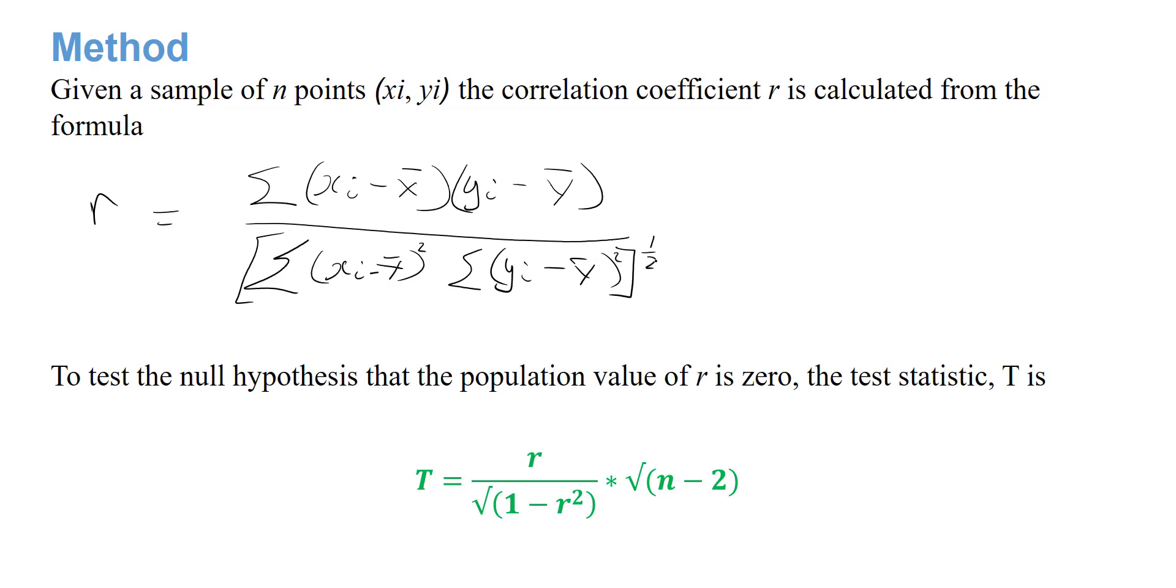To test the null hypothesis that the population value of r is zero, the test statistic T is given by T equals r over the square root of (1 minus r squared) multiplied by the square root of (n minus 2), which follows a t distribution with n minus 2 degrees of freedom.